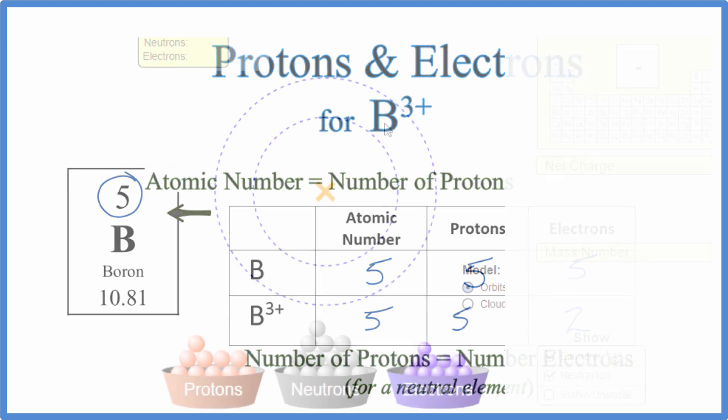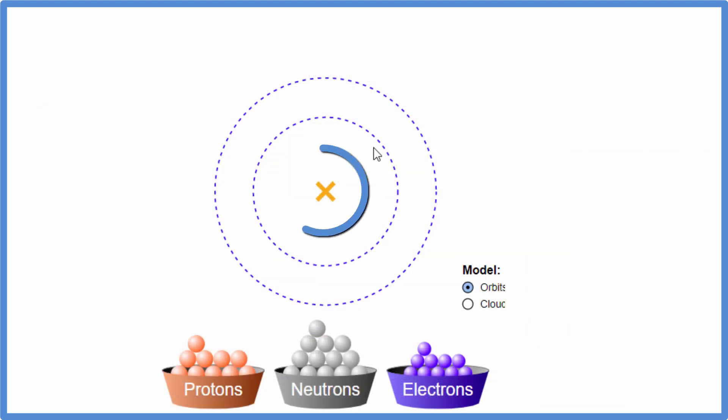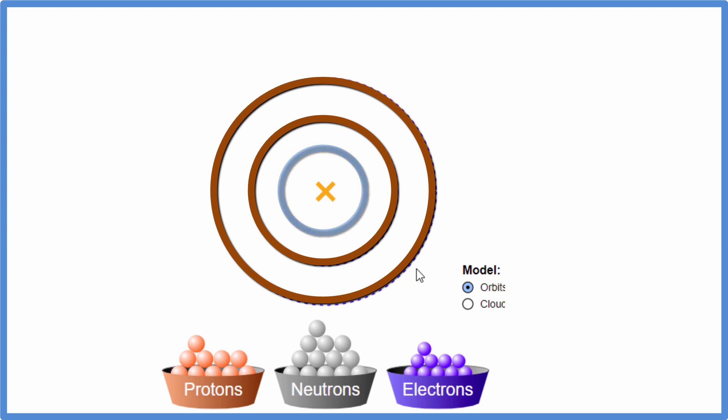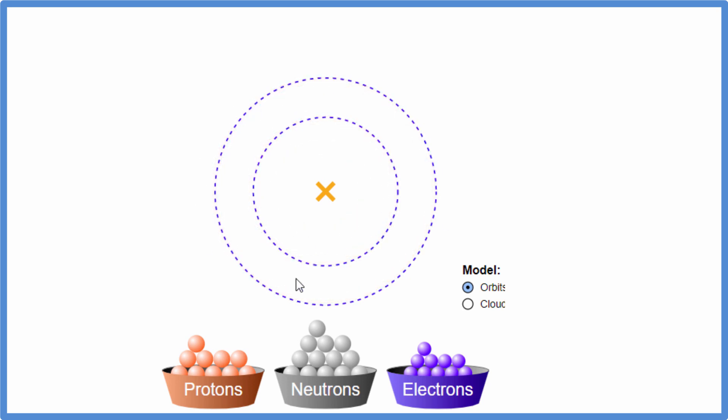Let's take a look at a simulation and see why that is. So this is the nucleus here and then these are the energy levels on the outside. This first one holds two, this one here can hold up to eight.